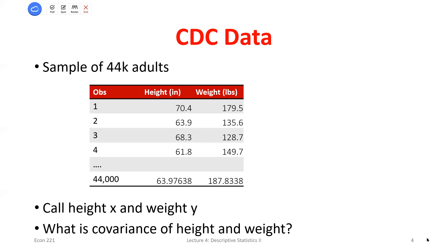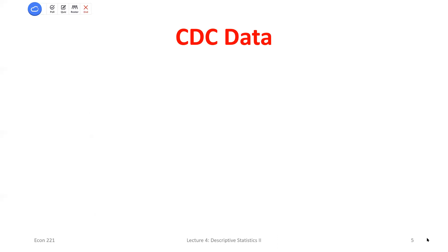We do this for every single person and add them all up. Some observations are above average height and below average weight, some are below and below. Once we add them all up and divide by the number of observations, we get some average measure of how far from the mean each observation lies and whether they're on the same side. When we do this, we end up getting a covariance of 76. But what do I do with this? It's positive, so it's telling me that when height is higher, weight tends to be higher as well. But I can't really put a magnitude to it.